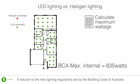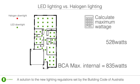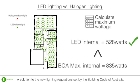To ensure the new LED lighting arrangement complies with the new BCA regulations, simply use the technique previously discussed. The example house has 44 LED downlights, and each LED globe uses 12 watts. A total of 528 watts is being used by the LED downlights to light the internal area of the house. Since 528 watts is less than the maximum of 835 watts, the new LED downlights meet the new BCA regulations.